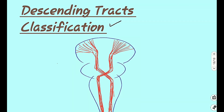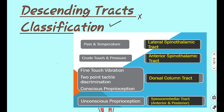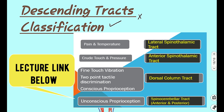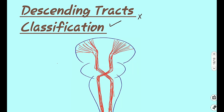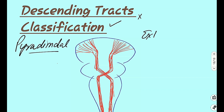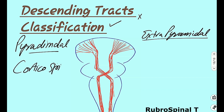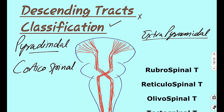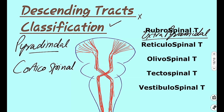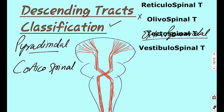The classification of the descending tracts is different from the ascending tracts. In descending tracts, we first divide these tracts into two categories: pyramidal tracts and the extrapyramidal tracts. The pyramidal tract is the corticospinal tract. The extrapyramidal tracts are the rubrospinal tract, reticulospinal tract, olivospinal tract, tectospinal tract, and the vestibulospinal tract.